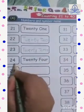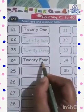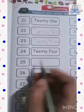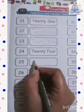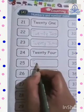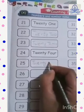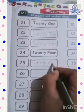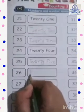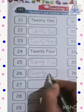Twenty-three: T-W-E-N-T-Y T-H-R-E-E, 3 — 23. Twenty-four: T-W-E-N-T-Y F-O-U-R, 4 — 24. Already written here. We have to write 25. Tell me the spelling of 25. T-W-E-N-T-Y — 25.